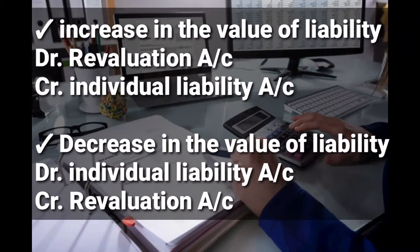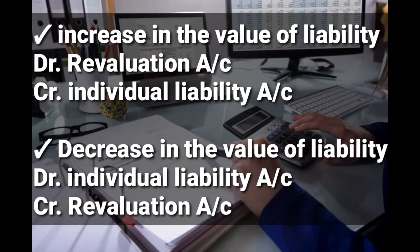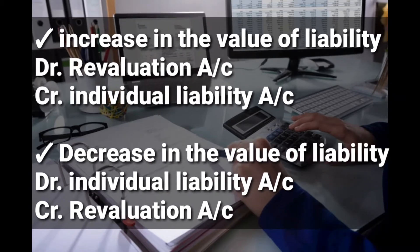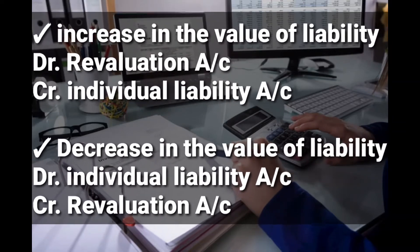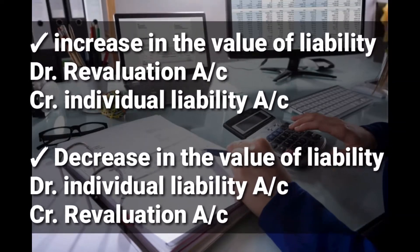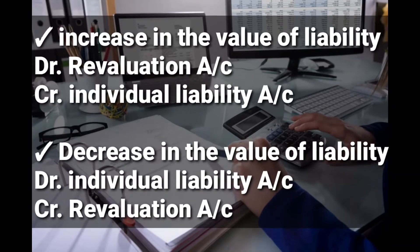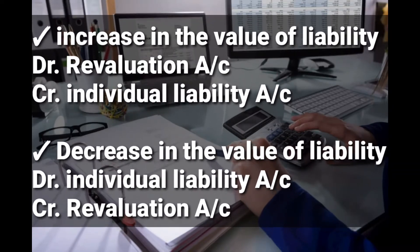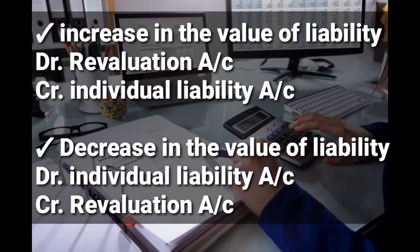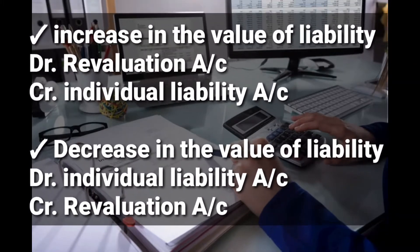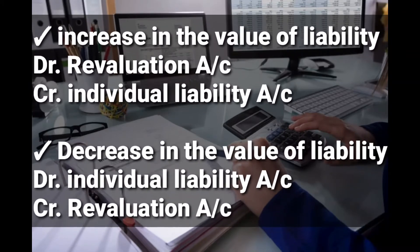In case of an increase in the value of a liability — liabilities increase by crediting and reduce by debiting — we debit the revaluation account and credit the individual liability account. In case of a decrease in the value of a liability, we debit the individual liability account because liabilities reduce by debiting, and then we credit the revaluation account.